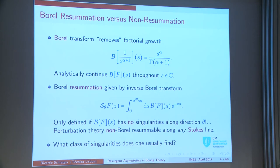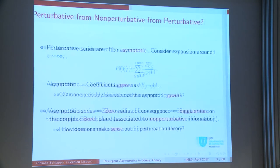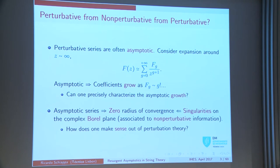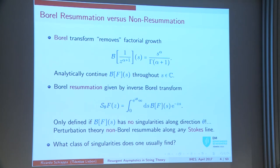The object that starts this business is the Borel transform. Basically, what the Borel transform does is remove the factorial. These F_g have leading factorial growth and subleading exponential growth. The Borel transform, by cutting off the factorial, leaves a series with exponential growth that can be analytically continued throughout the complex plane. Numbers should come out of Borel resummation — basically the inverse Borel transform, a Laplace transform. That integration is well-defined as long as we don't cross singularities of the Borel transform, and there will always be singularities because the starting series was asymptotic. Asymptotic implies singularities of Borel.